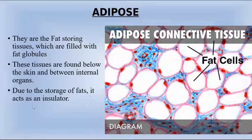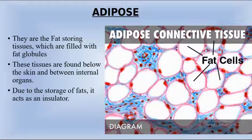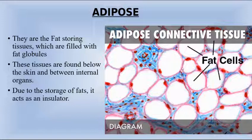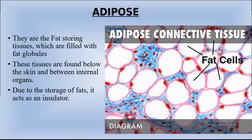Due to the storage of fats, adipose tissue acts as an insulator — it supplies heat to the body and maintains an optimum temperature. The fat cells store fats, and because of this, they act as an insulator.